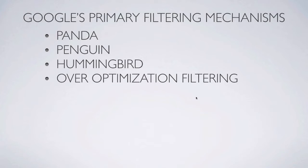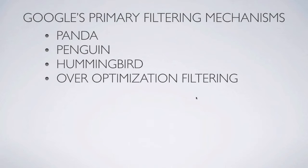Google's primary filtering mechanisms, according to 99% of all SEOs — and there's truth to all of this — are the Panda algorithm, the Penguin algorithm which hits you on commercial intent anchor text on low-quality websites, the Hummingbird algorithm which is a kind of translation algorithm, and over-optimization filtering.